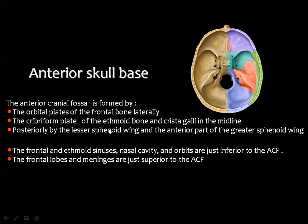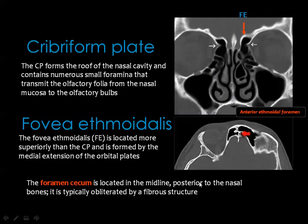The anterior skull base is formed by the orbital plate of the frontal bone, the cribriform plate of the ethmoid, the crista galli in the midline, and posteriorly by the lesser wing of the sphenoid as well as part of the greater wing of the sphenoid bone. The frontal and ethmoid sinuses, as well as the nasal cavity and orbits, are below the anterior skull base. The frontal lobe meninges are above the anterior skull base. These are images in the coronal and axial planes showing details of the anterior skull base.